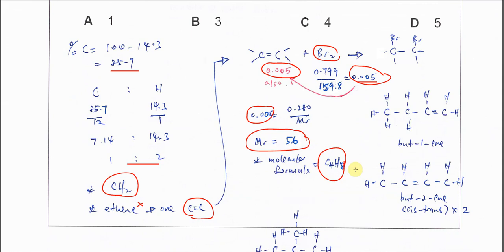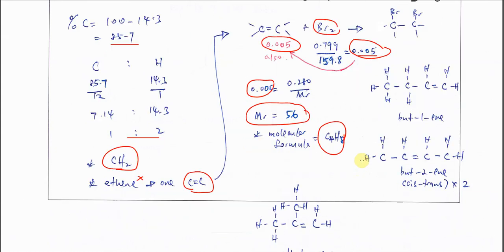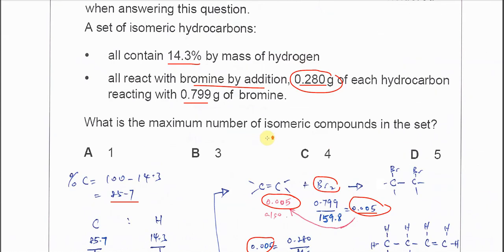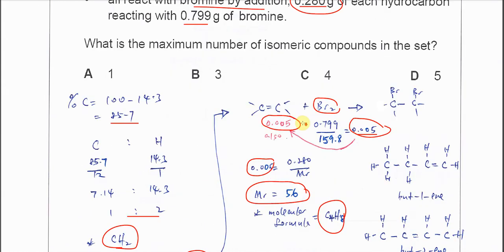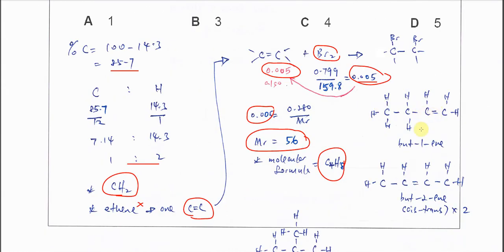Next, we deduce the number of isomers. The question mentions structural and stereoisomerism. Starting with the longest carbon chain, it can be but-1-ene.